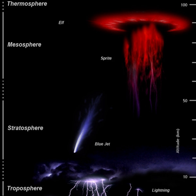Blue starters were discovered on video from a night-time research flight around thunderstorms and appear to be an upward-moving luminous phenomenon closely related to blue jets. They appear to be shorter and brighter than blue jets, reaching altitudes of only up to 20 km. Blue starters appear to be blue jets that never quite make it, according to Dr. Victor P. Pascoe, Associate Professor of Electrical Engineering.